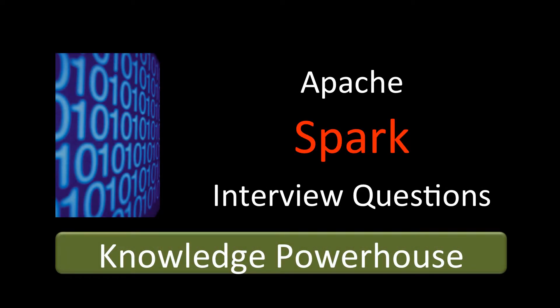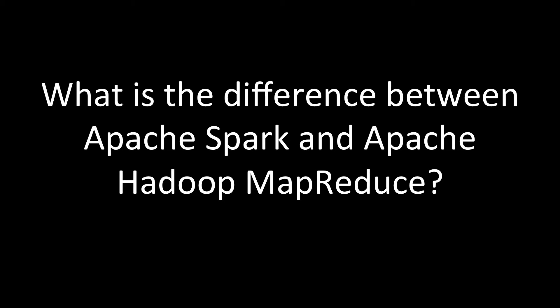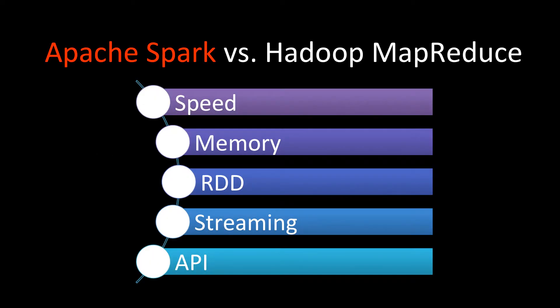Welcome to Apache Spark interview question series from Knowledge Powerhouse. The question is: what is the difference between Apache Spark and Apache Hadoop MapReduce? Why do people use Spark instead of Hadoop MapReduce? The main differences between them are speed, memory, RDD, streaming, and API.